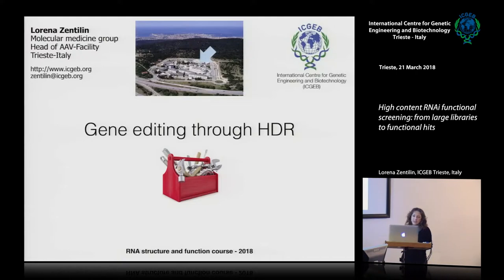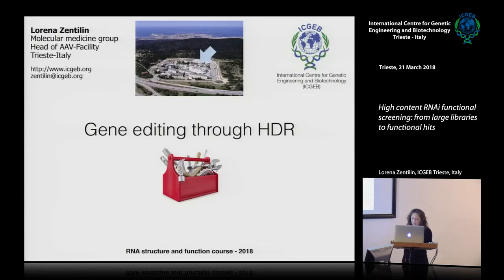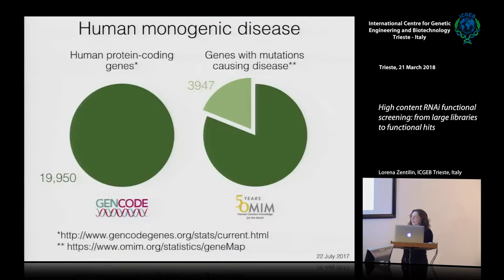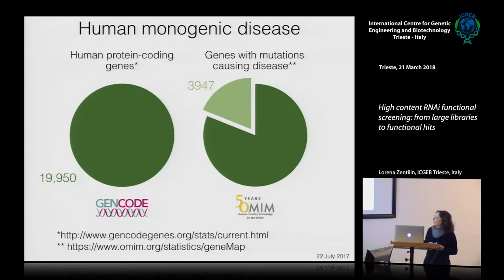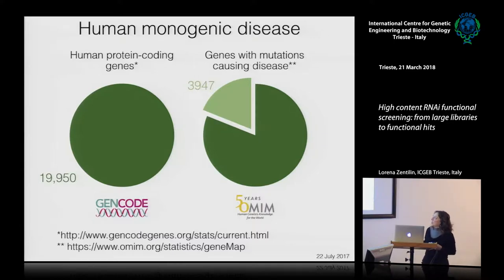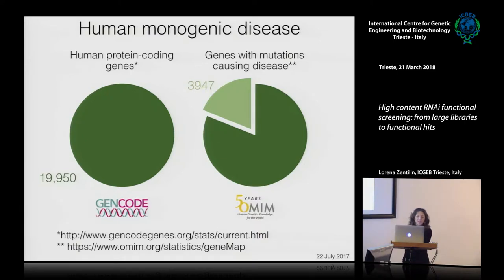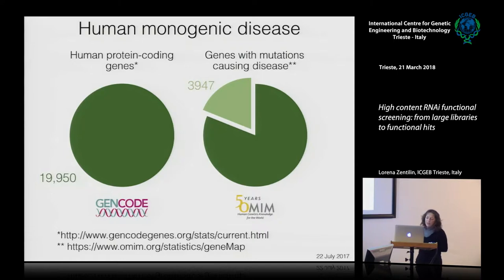The focus of this talk is improving homologous recombination. We start from a basic consideration: recent statistics have shown that in the human genome there are roughly 4,000 genes that may contain mutations causing disease. This is a very huge amount of mutations that can account for major morbidity and serious health problems, and we do not have any effective therapies for these diseases.